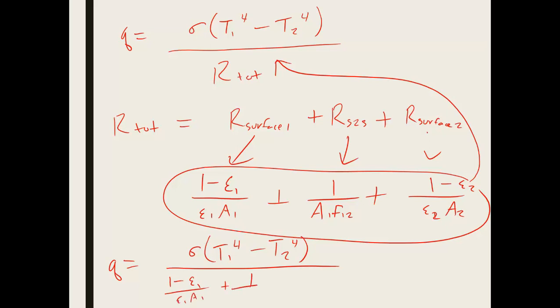Plus 1 over a1 times f12, plus 1 minus epsilon 2 over epsilon 2 times a2.